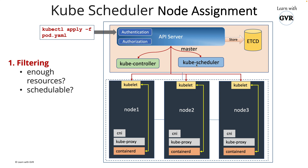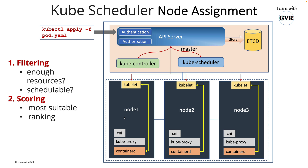The kube-scheduler checks whether nodes 1, 2, and 3 have enough resources — CPU, memory, etc. — and whether they are schedulable. This is the filtering step. Next is scoring: even if resources are available on multiple nodes, the scheduler assigns a score and ranks each node to find the most suitable one.